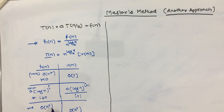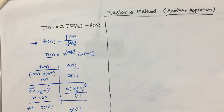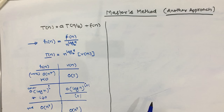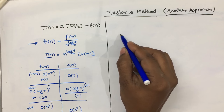In Case 3, when f(n) is asymptotically faster than n^(log_a b), we find the value of n^r where r is greater than zero. The value of v(n) is O(n^r), and we multiply that factor by n^(log_a b) to find T(n).